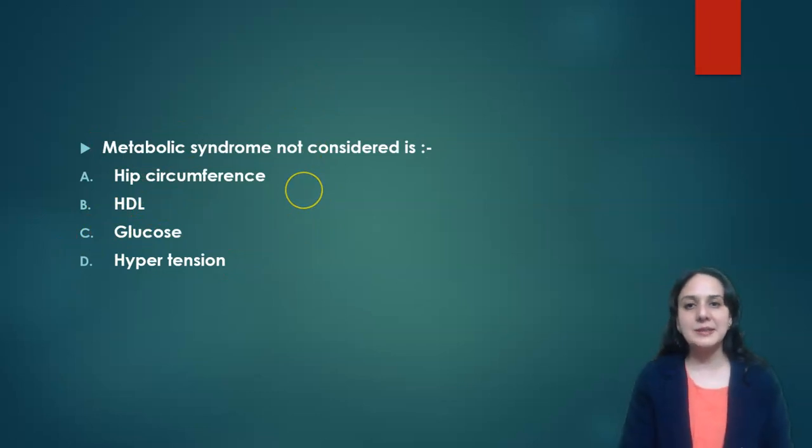Next is: metabolic syndrome is not considered - in criteria for metabolic syndrome, not considered is hip circumference, HbA1c, glucose and hypertension, that is blood pressure. So here we take abdominal circumference. So A is not included in the criteria.